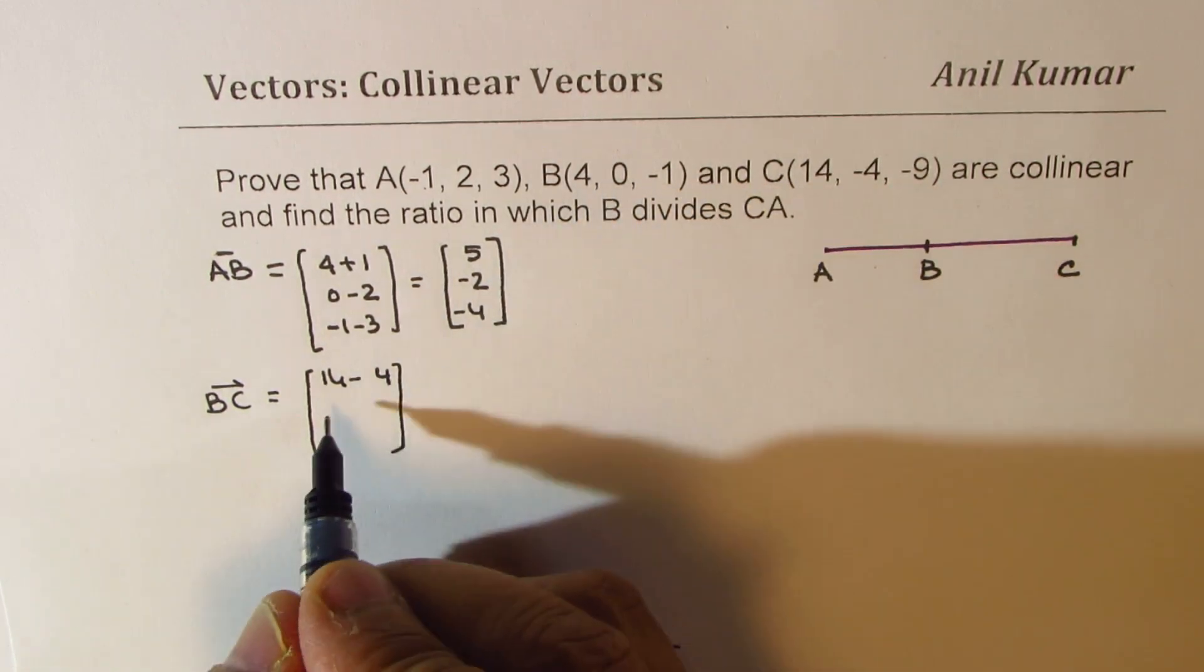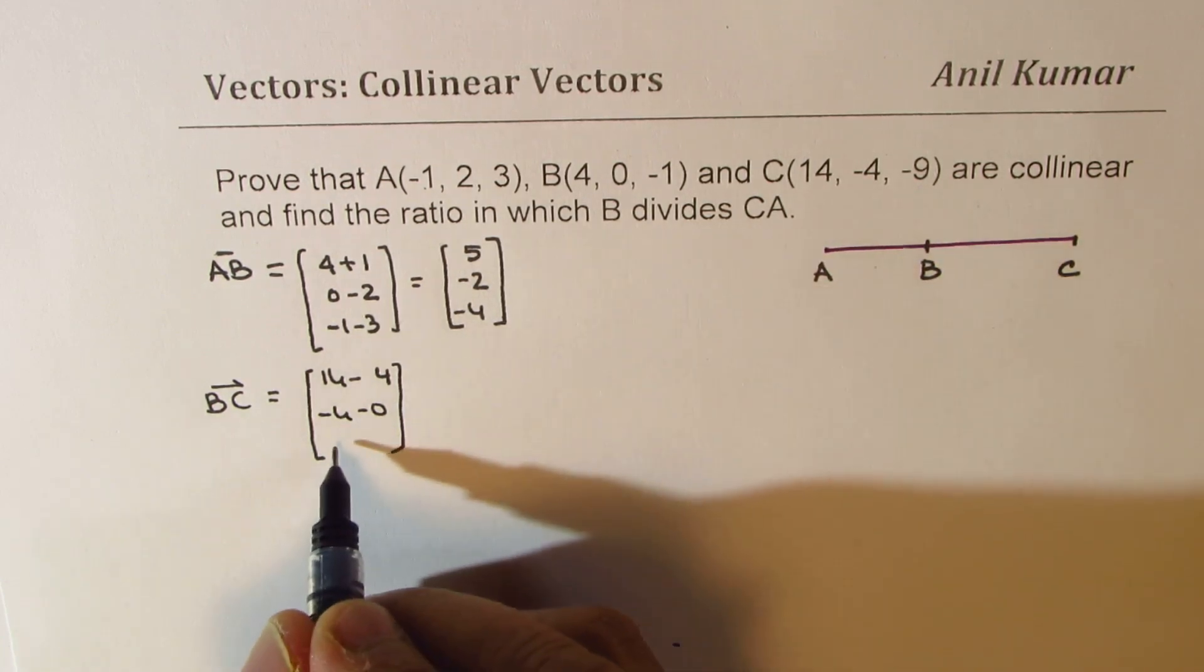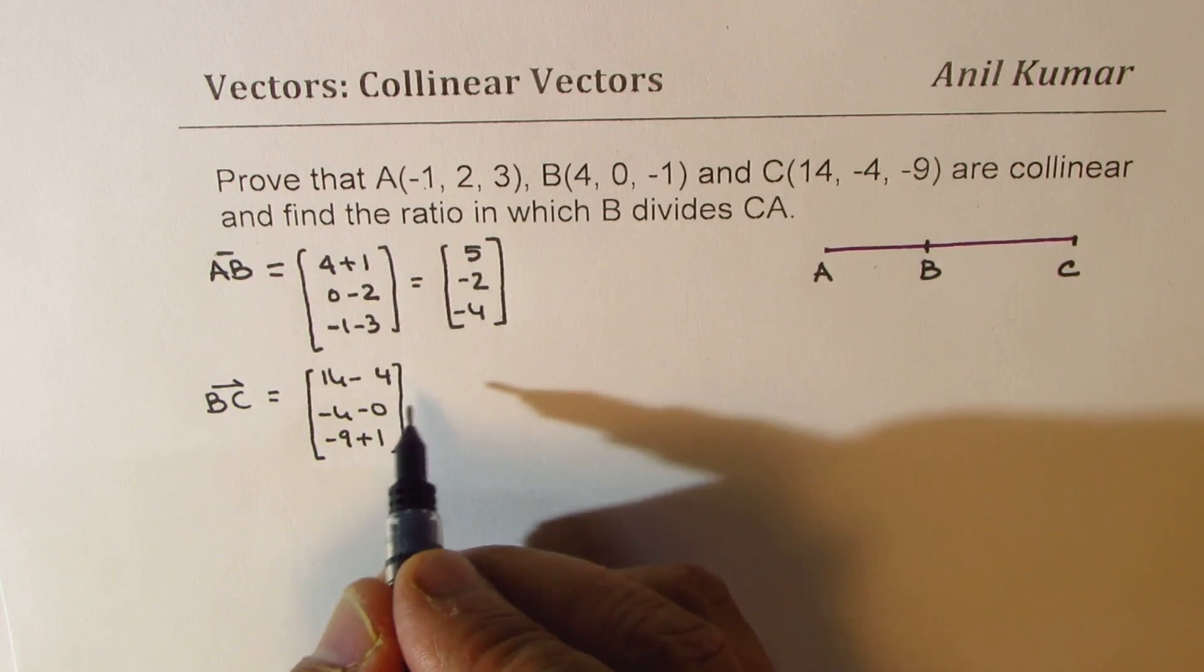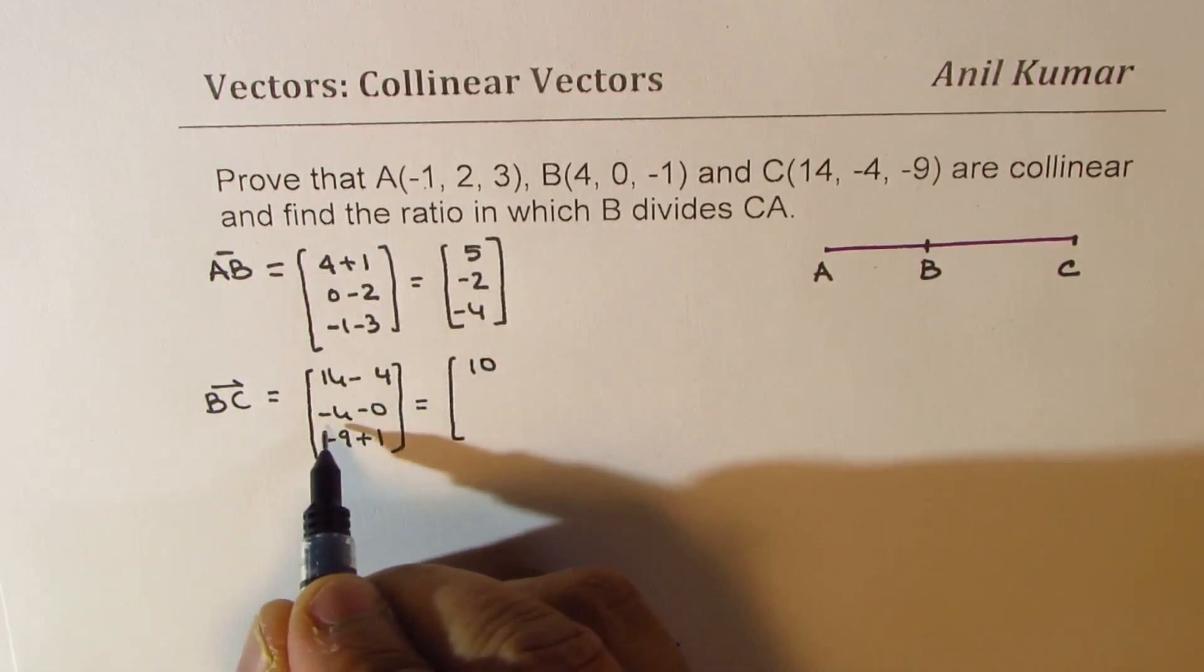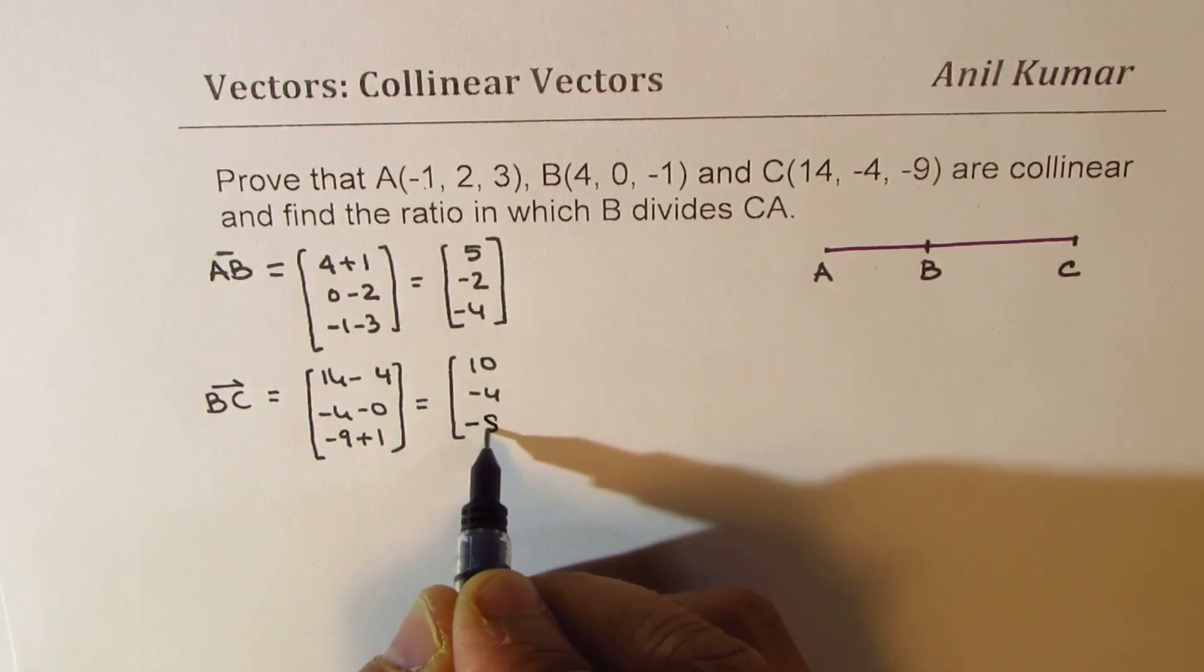-4 minus 0 and -9 minus -1. Minus of -1 becomes plus 1. So that gives you 14 minus 4 is 10, -4, and this gives you -8.